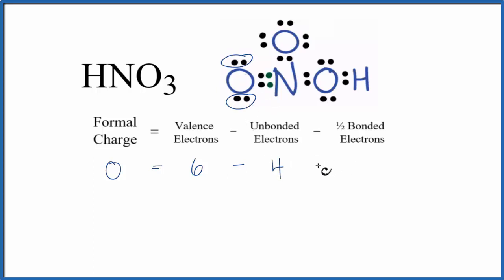From that, we'll subtract one-half of the bonded valence electrons. These are the electrons between atoms involved in the chemical bond. We have 2, 4 of those. 6 minus 4, that's 2, minus 2, equals 0.